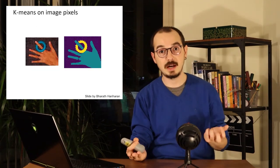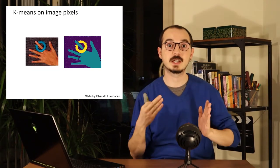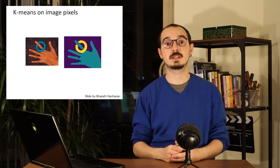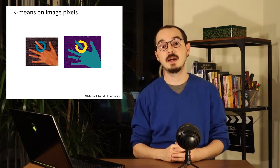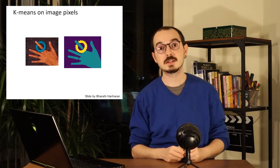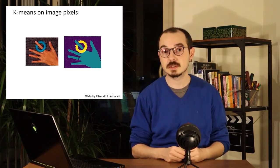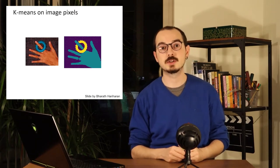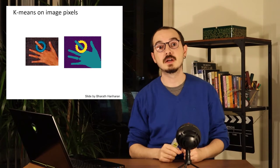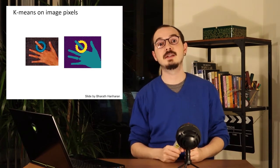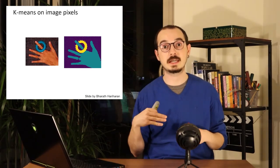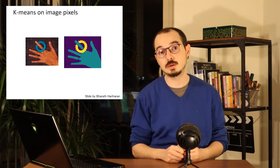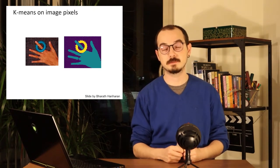We can put the pixel values as our three-dimensional features and just run the k-means algorithm with three clusters on a simple image — we will see similar colors get clustered into the same segments. In this result, you can see some issues in the background because there are small parts of the cloth underneath the hand that have very similar colors to the hand, so they get assigned incorrectly. This is because we are only looking at color values here, nothing else.